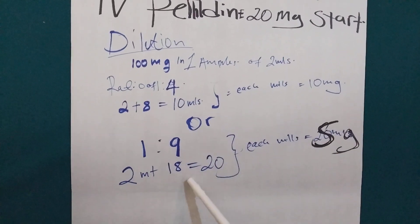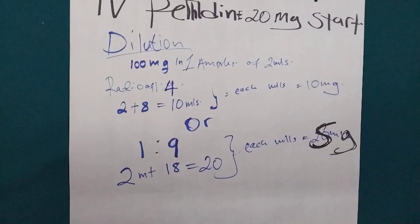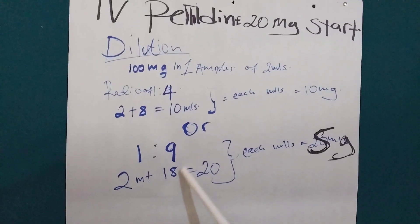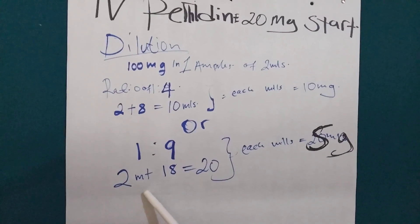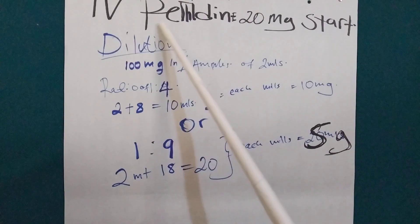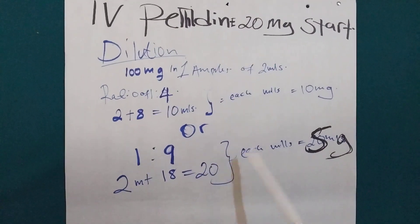So, we are going to use a 20 mL syringe in this case. We are going to aspirate 18 mL of normal saline or water for injection and then we are going to add 2 mL of Pethidine.